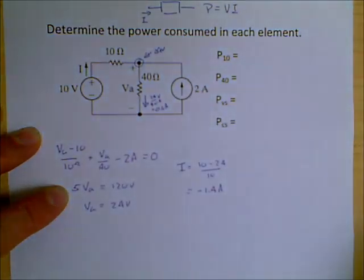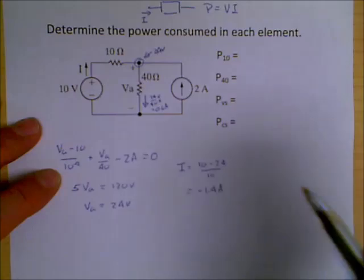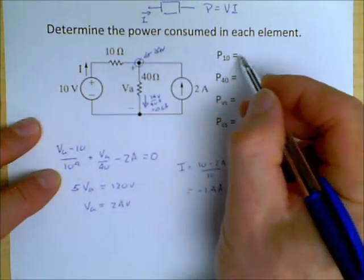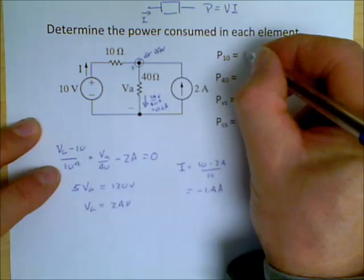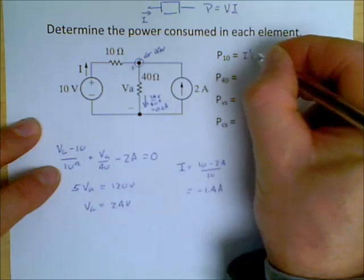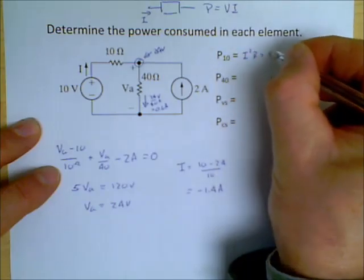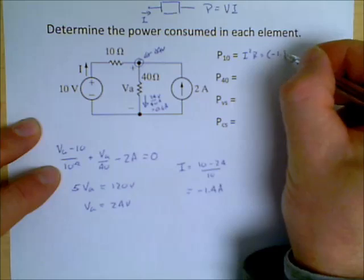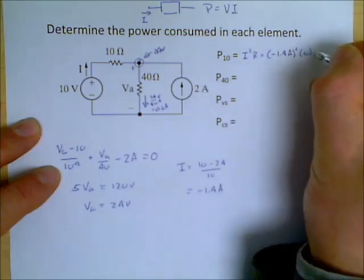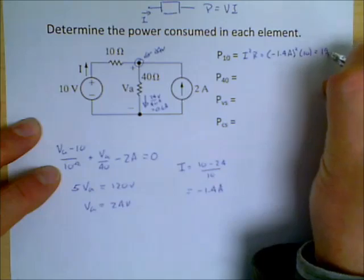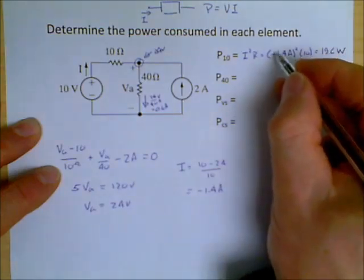Alright, so we have enough now that we can figure out what the power dissipation in all of the elements results in. So let's start off with the 10 ohm resistor. The 10 ohm resistor, I use the standard expression that says this is I squared R. In this particular case, it is minus 1.4 amps, all squared, multiplied by 10, which is equal to 19.6 watts. Alright, the negative sign squares.